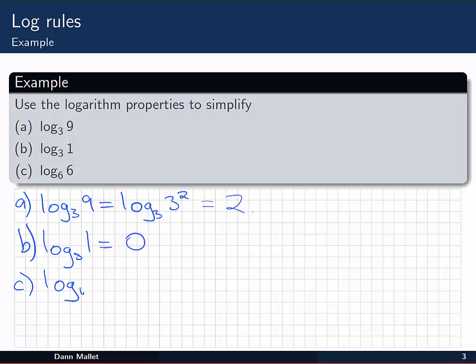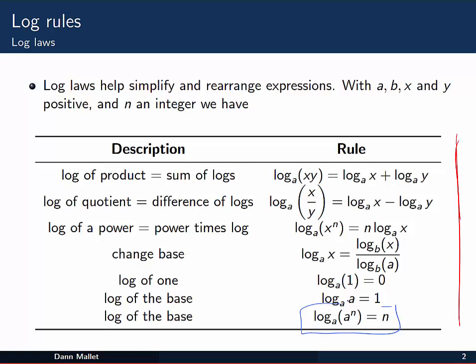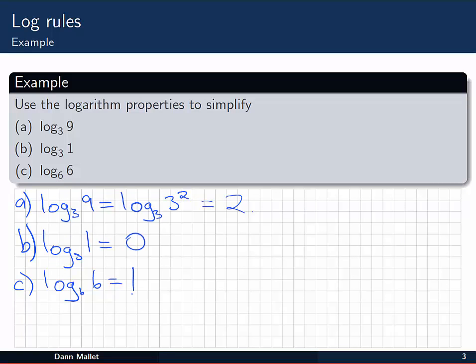In C we have log base 6 of 6 itself. Again from our rules, the log of the base is always equal to 1. So there we go.